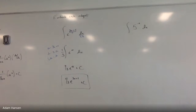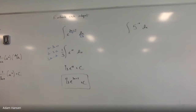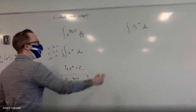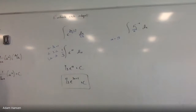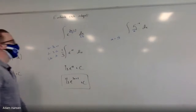Let's try another one — another indefinite integral. What is the anti-derivative of 5 to the negative x dx? Is this base e or base a? It's some other base — base a. The base of this exponential function is 5, so let's let a equal 5. We're going to use the formula: the anti-derivative of a to the u du is one over the natural log of a times a to the u plus C. First, let's figure out what u and du are.